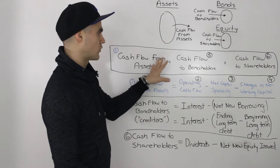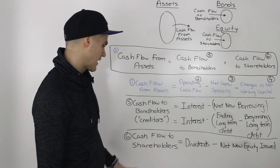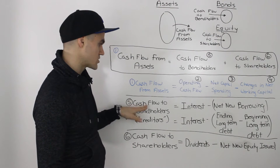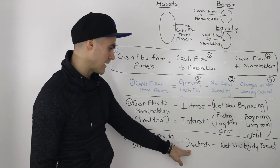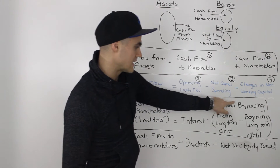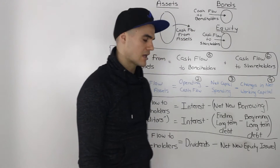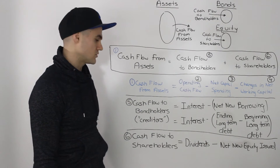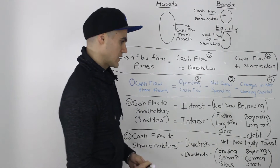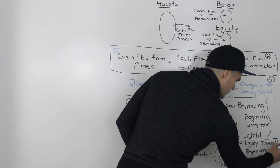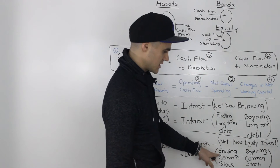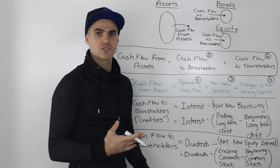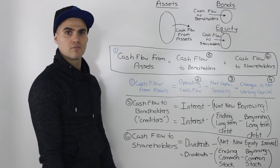Finally in the general formula, we're going to deal with the cash flow to shareholders. Very similar to the intuition for cash flow to bondholders: instead of interest, we pay shareholders dividends, and instead of minus net new borrowing, we have minus net new equity issued. So cash flow to shareholders equals dividends minus net new equity issued, where net new equity issued equals ending common stock minus beginning common stock — figures found in the equity portion of the balance sheet.